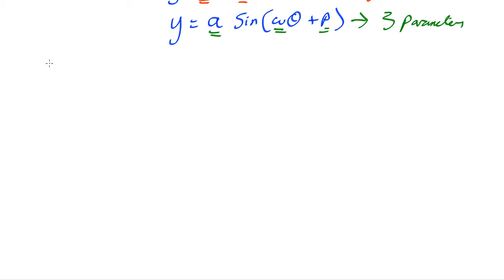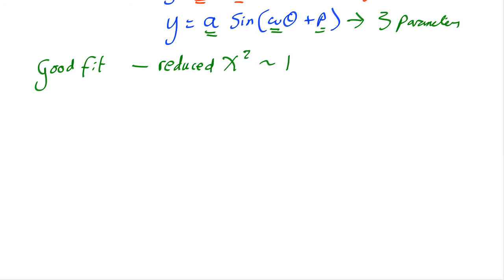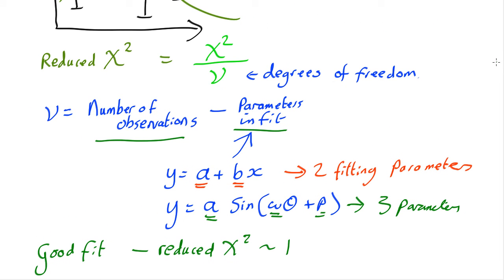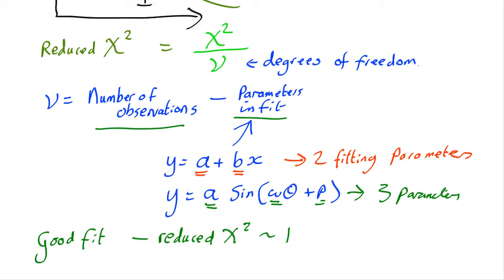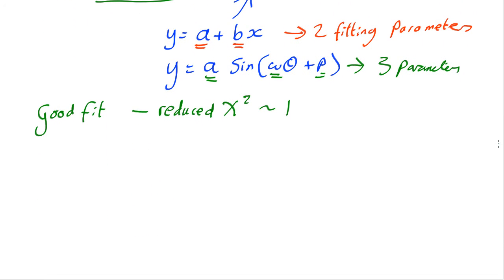And if the fit is perfect, then reduced chi-squared should be about one. That's telling you that the scatter in the points, how much they are scattered around your prediction is about what you'd expect from the errors.